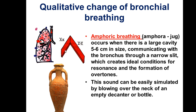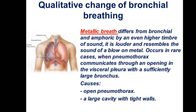Another type of bronchial breathing is metallic breathing. Metallic breathing differs from bronchial and amphoric by an even higher timbre of sound — louder and resonant, like the sound of blown metal. It occurs in rare cases when pneumothorax communicates through an opening in the visceral pleura with a sufficiently large bronchus. Causes include open pneumothorax and large cavities with tight walls. Air is present in the pleural cavity.